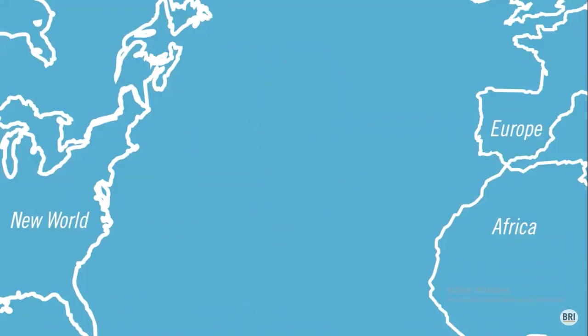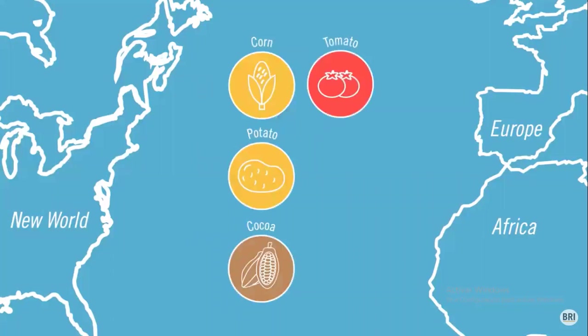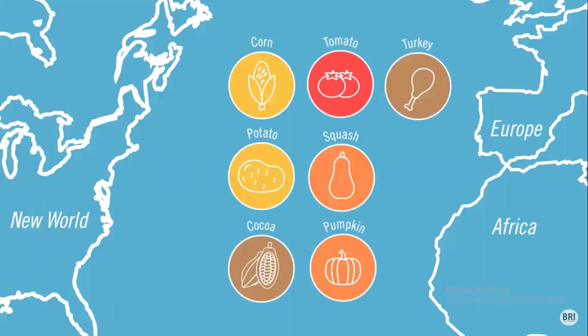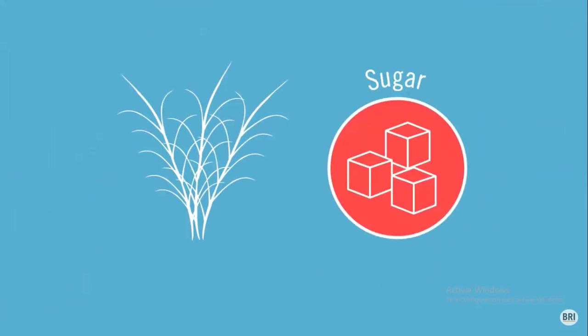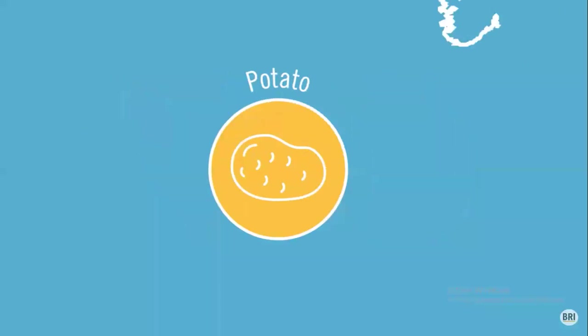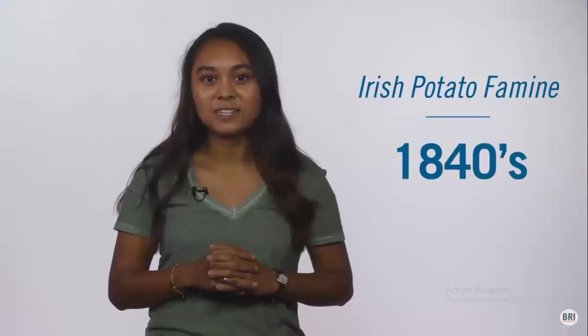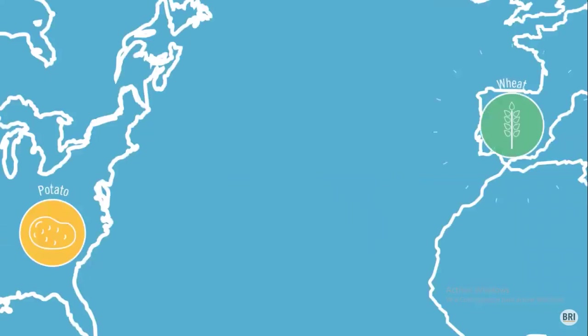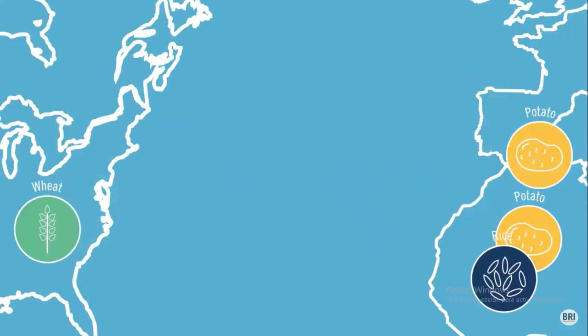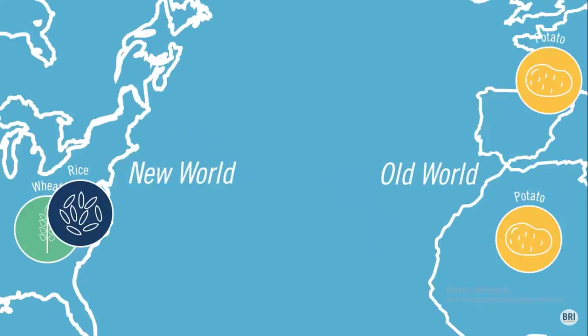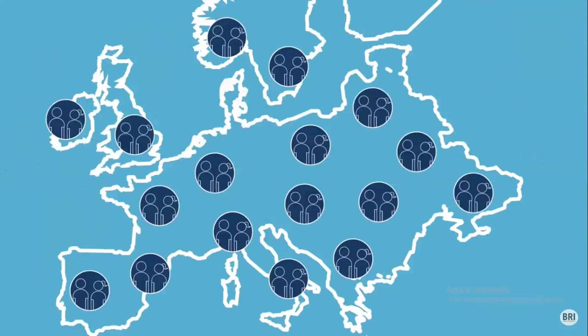In return, Europeans and Africans gained access to new crops including corn, potatoes, cocoa, tomatoes, squash, pumpkins, and turkeys. Europeans also discovered cane sugar growing in the tropics, which had a dramatic impact on sweetening the European diet. Potatoes later became a main food source for many European regions, including Ireland and Eastern Europe. The exchange of food was extremely important and contributed to a population explosion in Europe by the year 1800.